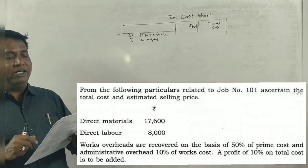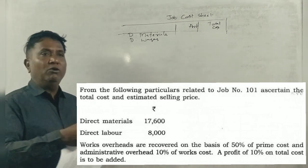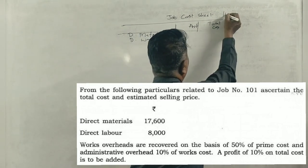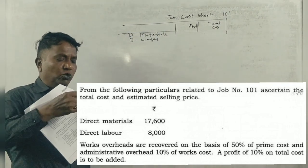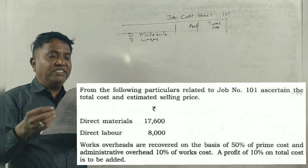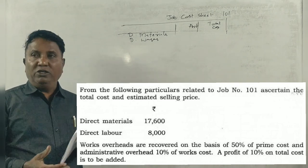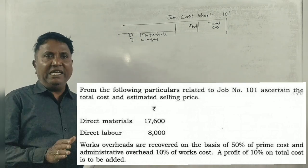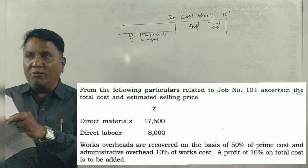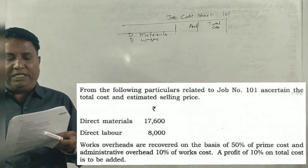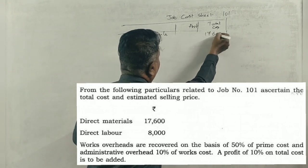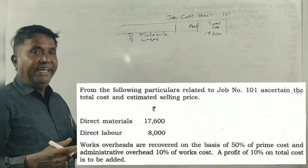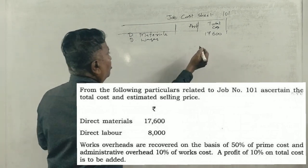From the following particulars relating to job number 101, ascertain the total cost and estimated selling price. Direct materials: ₹17,600, Direct labor: ₹8,000.